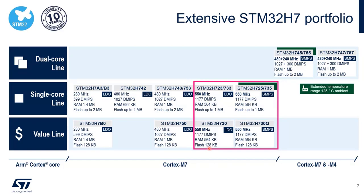The value line achieves lower cost by limiting the flash size to up to 128 kilobytes. In the market there are some other microcontrollers for high performance called flashless microcontrollers — we use a similar concept for the value line. If you see H7 ending in zero, it's always the value line. In STM32 naming, if the suffix is zero, it's the value line with flash limited to 128 kilobytes.